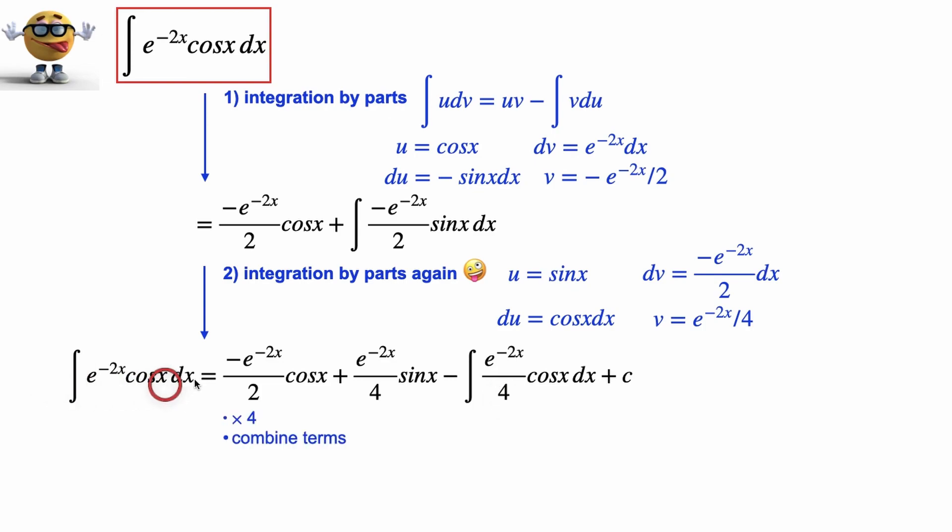There's a 4 in the way, but we can just multiply everything by 4 to get rid of the fractions here, and then combine the terms. So I move this one over to this side, which gives us 5 of the integral that we're trying to evaluate equals to this one here. So this 2 goes away because we multiplied everything by 4. So we have a 2 on top. This 4 is gone because we multiplied everything by 4.